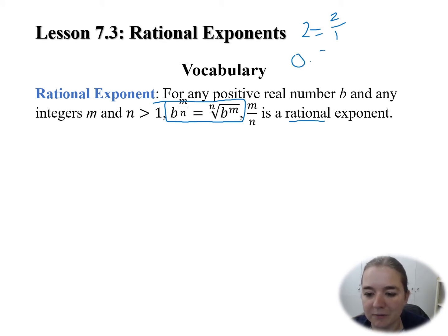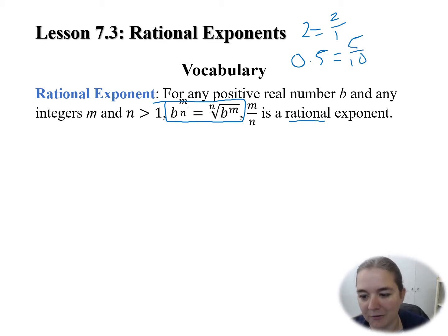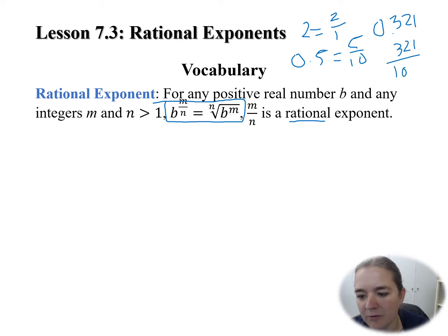If I have 0.5, I can represent that as 5 tenths, or simplify it down to 1 half. If I have 0.321, that's 321 thousandths — again, I can write it as a fraction of integers.